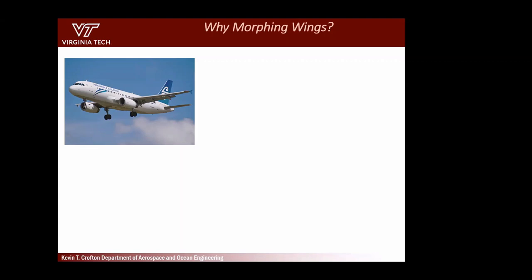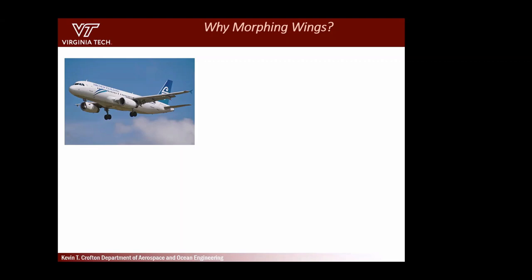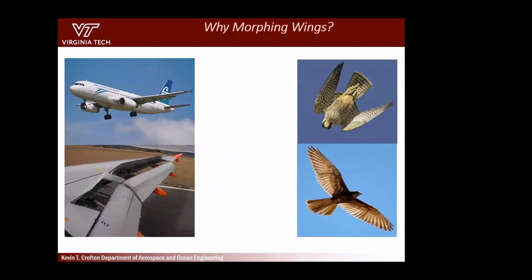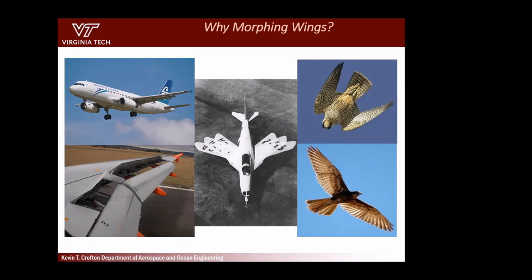One of the things we've been working on in this lab is morphing. Aircraft are typically designed for one flight regime, but ideally you want something that can take off, land, loiter, and cruise — changing shape to fly optimally for different conditions. There has been research doing this, like experimental aircraft with swept wings. If you've seen Top Gun, Tom Cruise flies an F-14, which is a swept wing design.